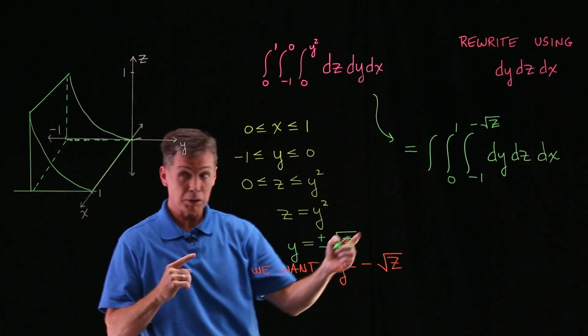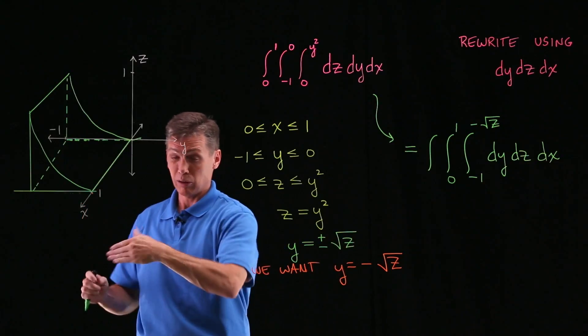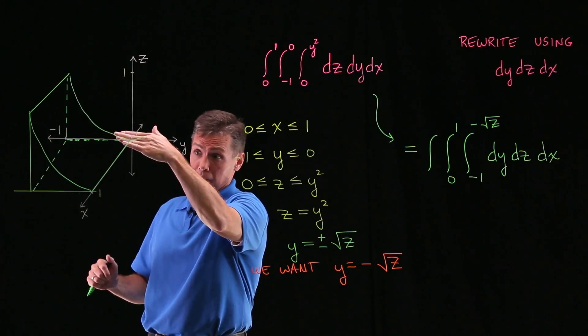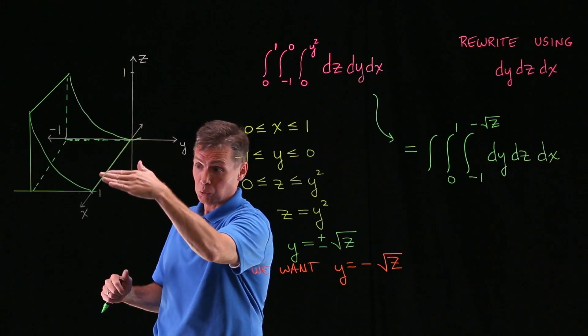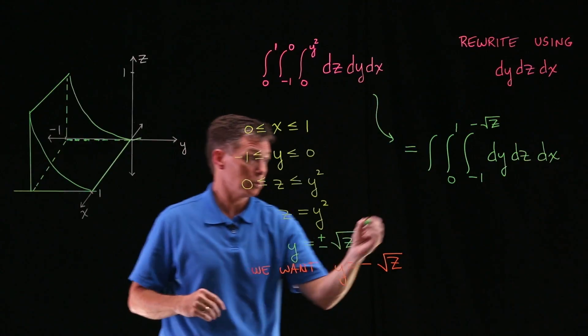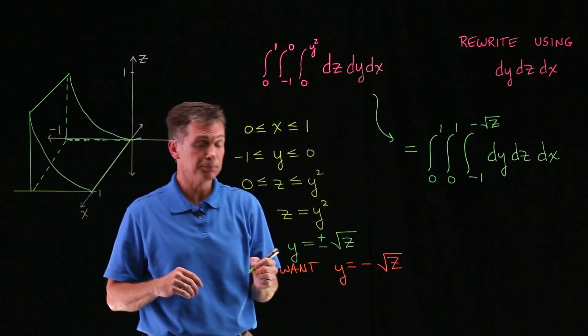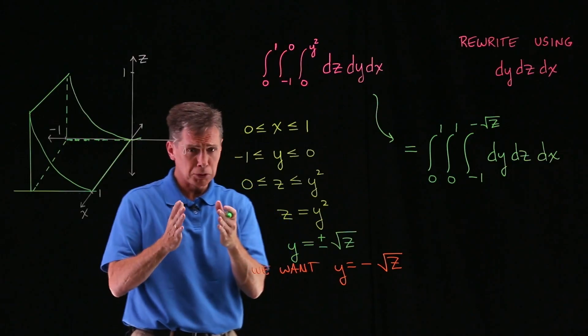And then finally, the x variable. Looking at my drawing, how low does x go? That's your 0 again. And then how high does x go? I'm coming out this way. And I only go out as far as a 1. So 0 to 1 for those limits as well. Hope that helps you. Try some on your own.